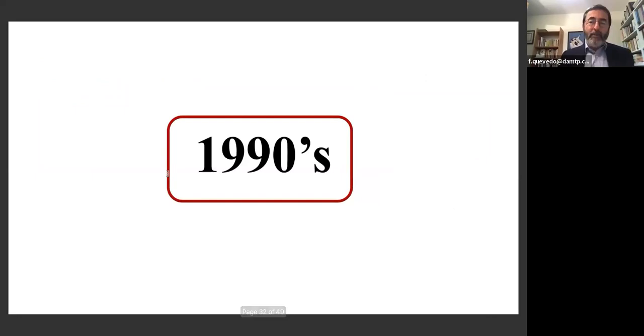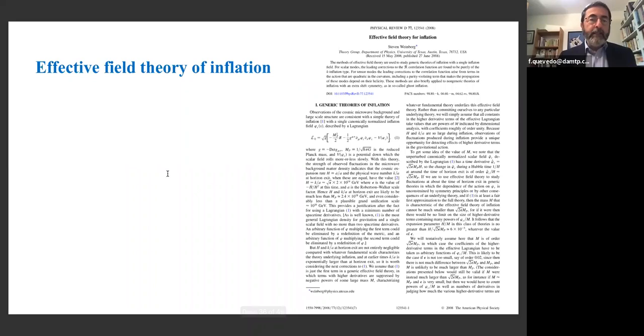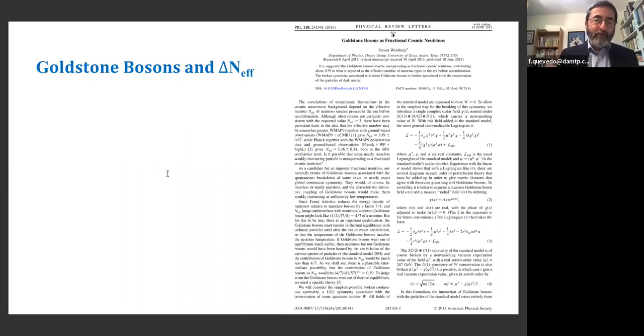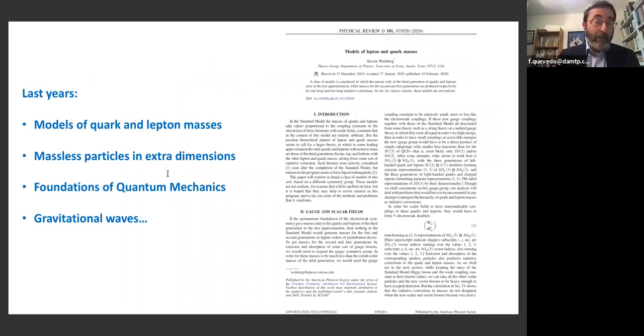He also came out with ideas about how to experimentally test quantum mechanics, the superposition principle. In the 1990s, effective theories in nuclear physics made a huge contribution to nuclear physics. The same arguments of effective theories applied to low energies. In the 2000s, effective theories in cosmology, inflation. In the 2010s, proposals of Goldstone bosons to explain what is called delta N_eff, which is dark radiation, another potential mystery from the standard model of cosmology. Then more recently, he worked in models of lepton and quark masses. His last paper was probably massless particles in extra dimensions. He had been concentrating efforts in understanding the foundation of quantum mechanics in the last few years, and more recently working in aspects of gravitational waves. That shows you how active he was even at age 88.